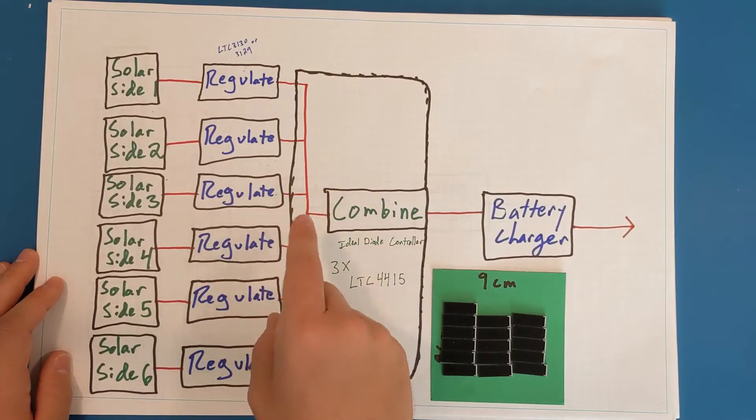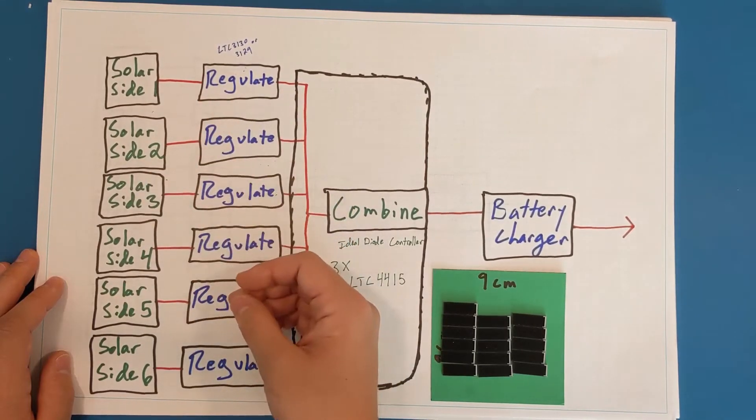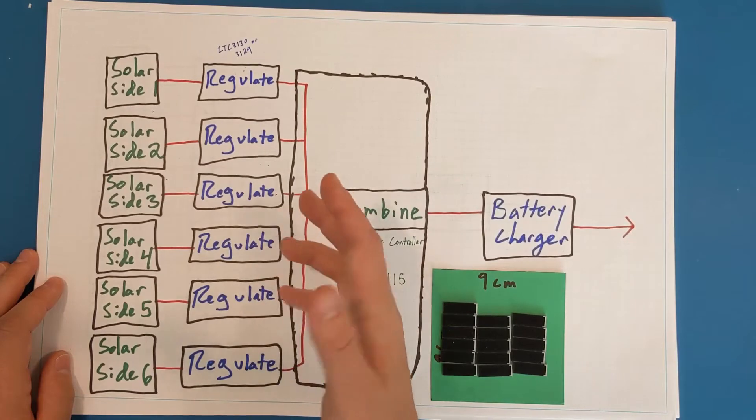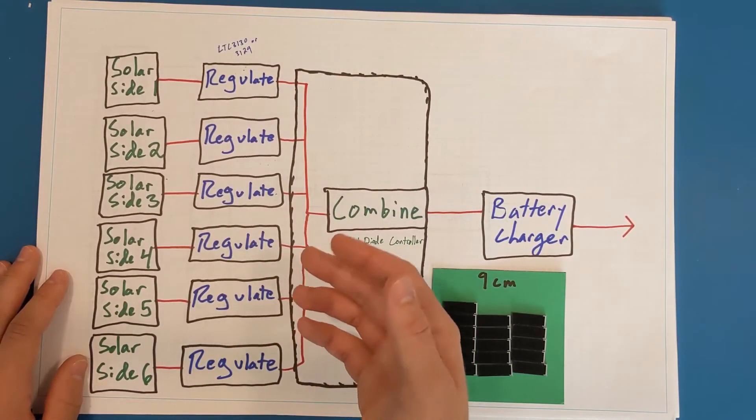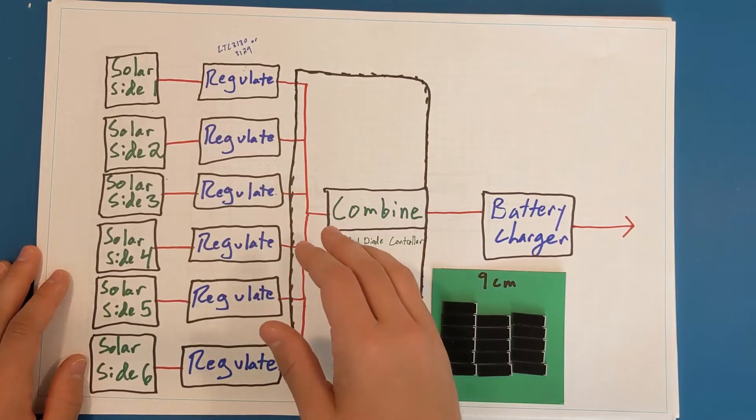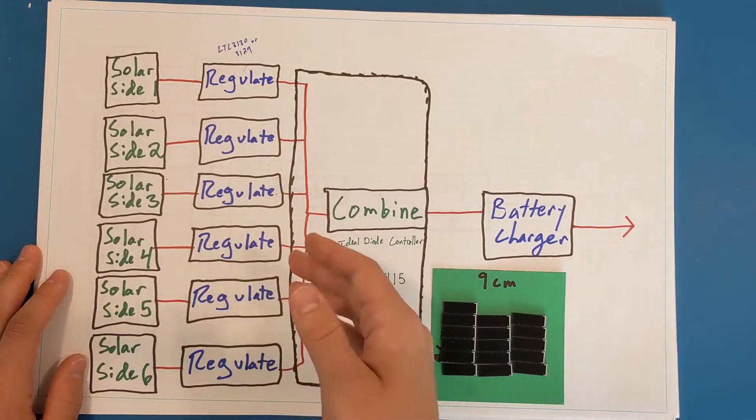However, it is not the most space efficient and it's not the most cost efficient. Each one of these regulators, the LTC3130 or the 3129, is roughly $7, which is pretty small. But for what I'm trying to do, I'm trying to minimize cost, so having six of these isn't necessarily a great idea.